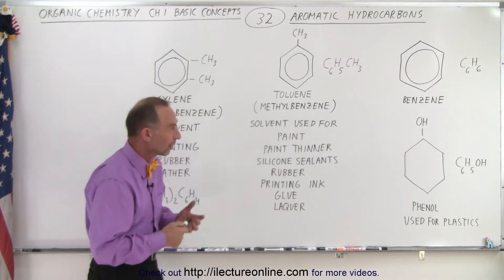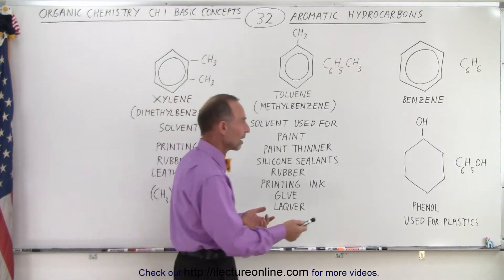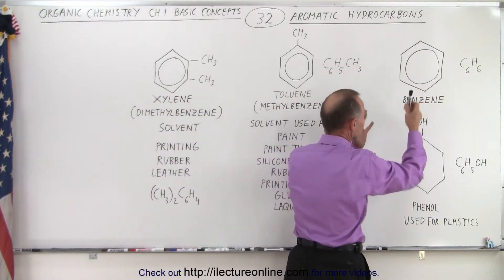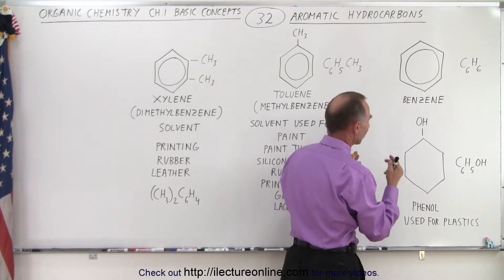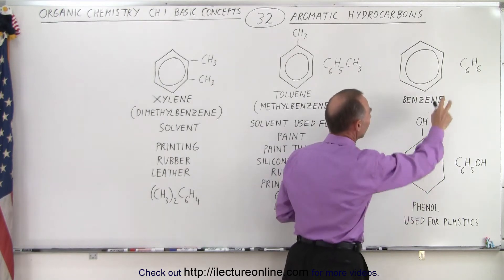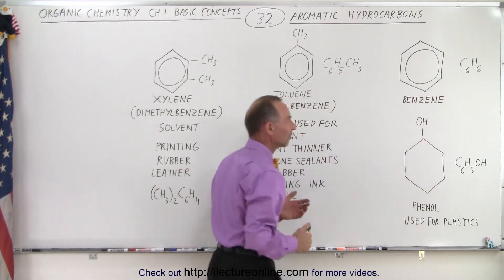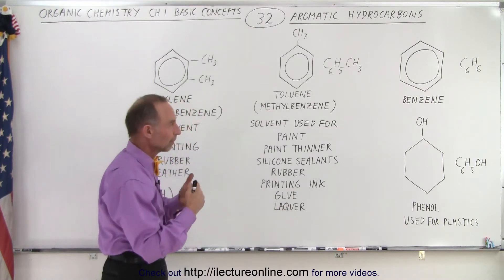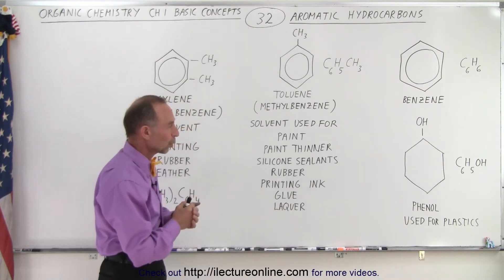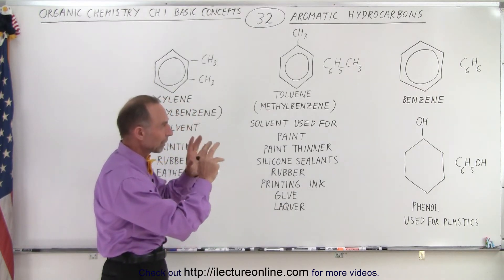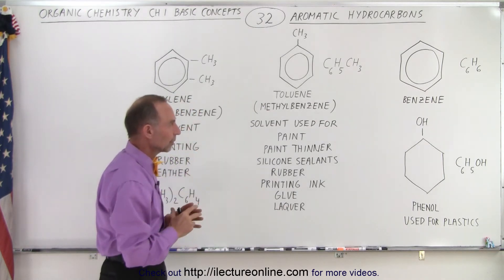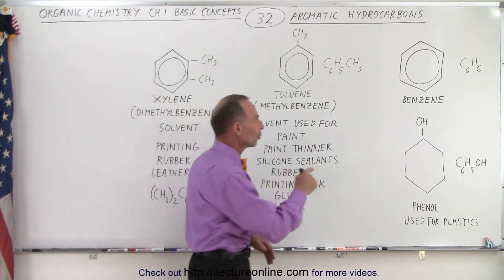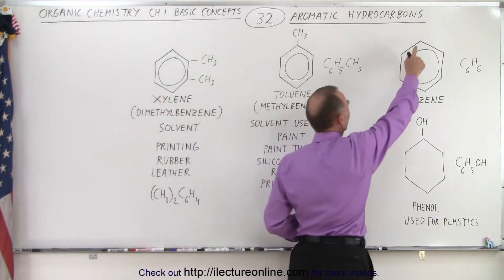We're going to show you some examples. Of course, we have the straight benzene ring like this, and that's a simplified way of symbolizing it. We have the C6H6 formula that we use for that particular molecule.